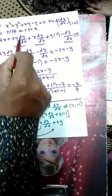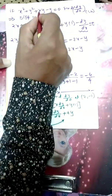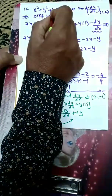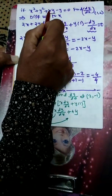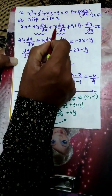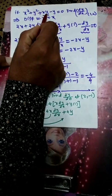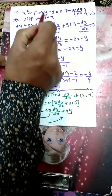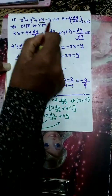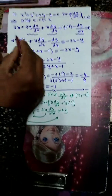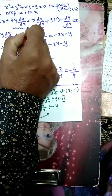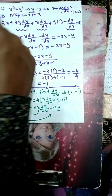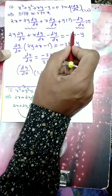For xy, this is a product, so we apply the u·v rule: first as it is times derivative of the second — derivative of y is dy/dx — plus second as it is times derivative of x, which is 1. Then minus the derivative of y, which is dy/dx, equals 0. We collect the dy/dx terms to one side and the non-dy/dx terms to the other side.